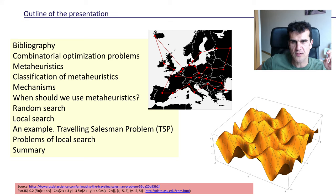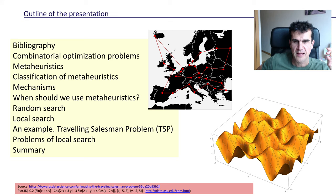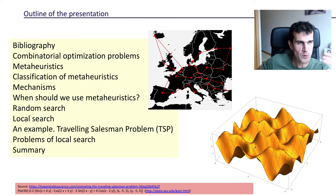Then we're going to discuss the kind of features or characteristics of problems that suggest that using metaheuristics may be useful or promising. And we're going to see two of the most basic algorithms that usually form part of any metaheuristics, and these are random search and local search. Random search is basically 100% exploration, and local search is 100% exploitation. We will discuss this in the following videos.